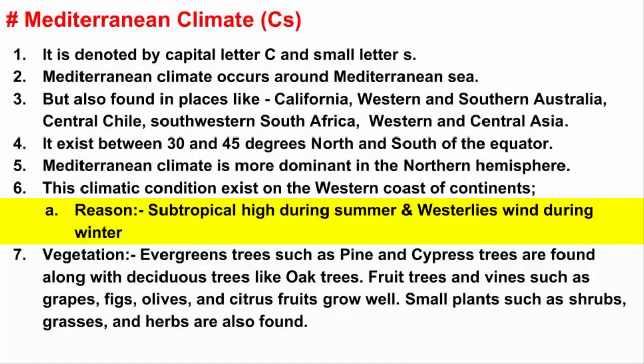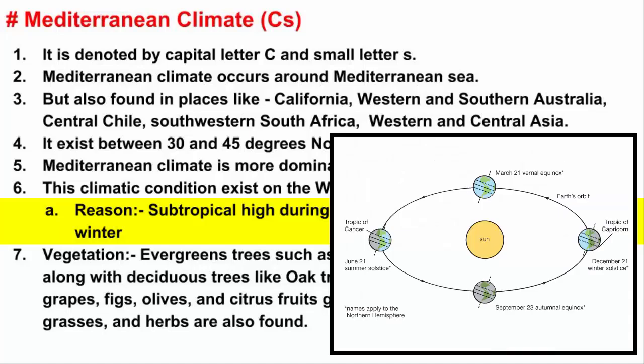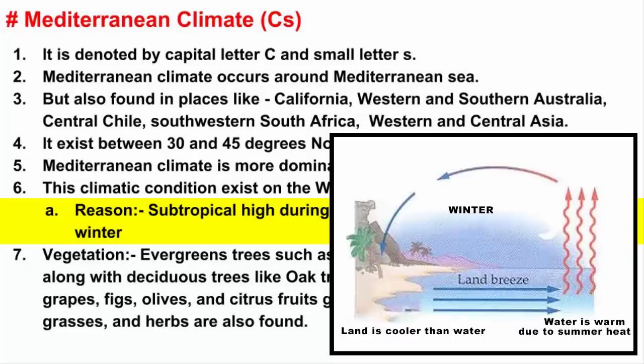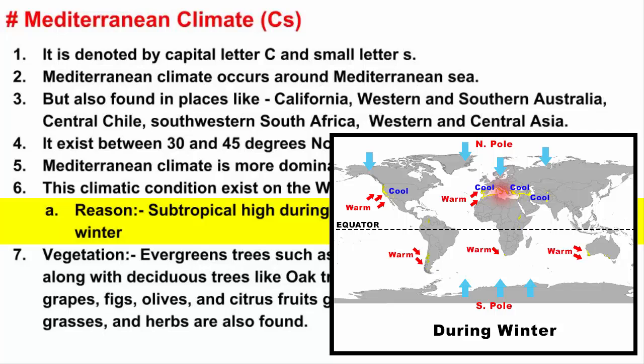The influence that westerly winds have on Mediterranean climate is during winters. During winters, the Northern Hemisphere is slightly tilted away from the sun, so most places in the Northern Hemisphere receive less sun rays, which makes the landmass cool. Then the water body, which was warmed up all summer, moves in and keeps the land warm, and often brings rain.